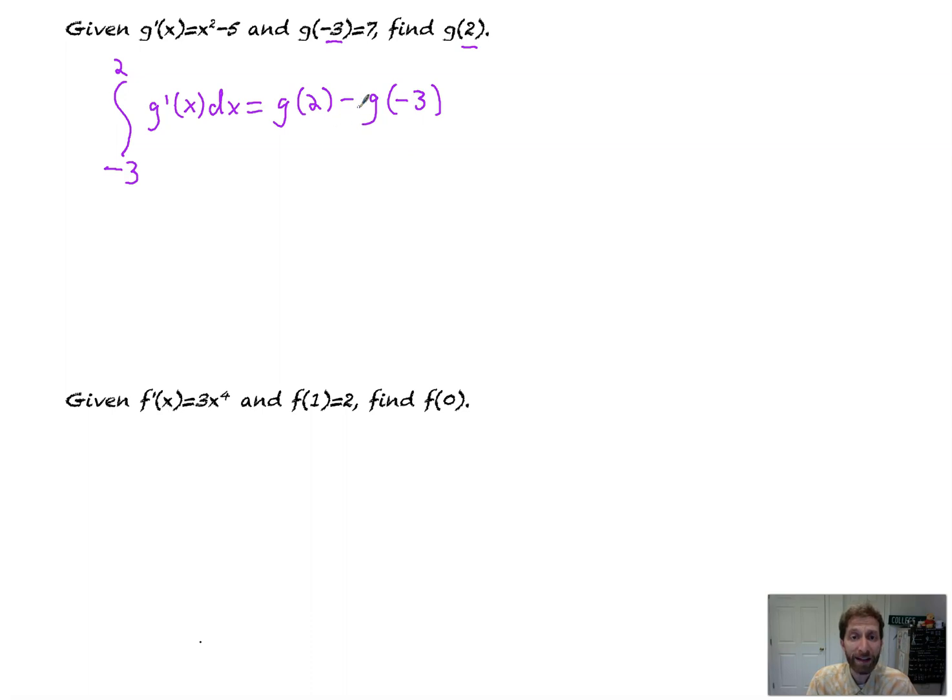All I'm going to do is add g of negative 3 to both sides. Like an equation, the variable in this is g of 2. So g of negative 3 plus the integral from negative 3 to 2 of g prime of x dx is equal to g of 2.